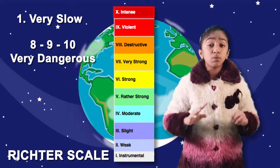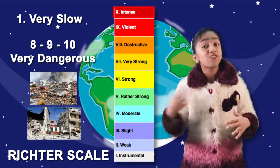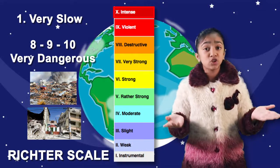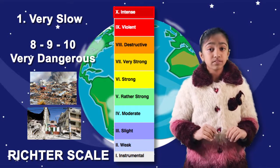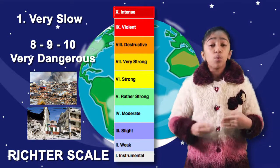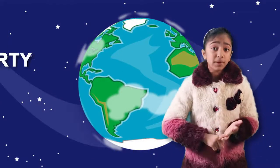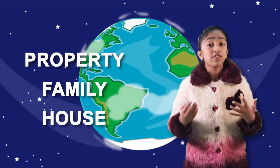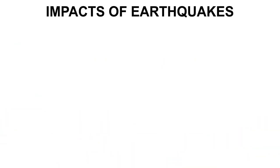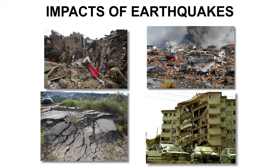The earthquakes measuring 9, 8, or 10 are the most destructive types — buildings fall and everything gets damaged. When we have a big earthquake, you can lose your property, your family, your house — everything can be lost. And more impacts of earthquakes are as you can see here. Earthquakes are one of the most destructive forces of nature.